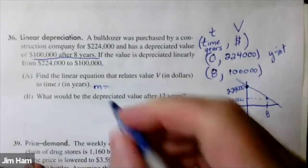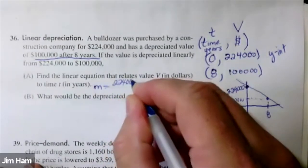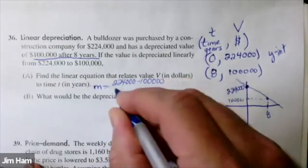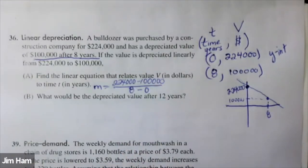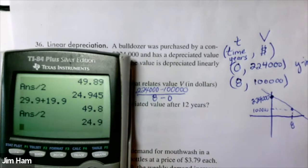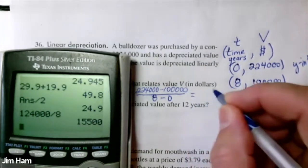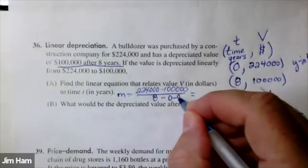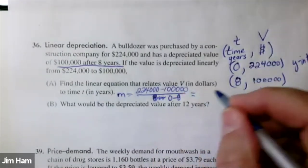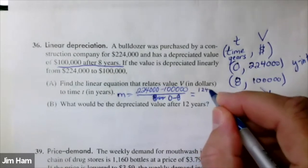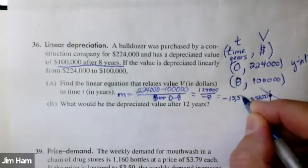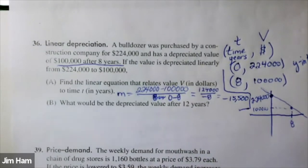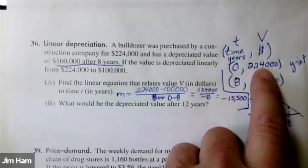Let's subtract the y-coordinates on top and similarly subtract the x-coordinates on the bottom. I can do that calculation on the top pretty quickly — that's 124 — and we're going to divide that by eight. I knew that the slope had to be a negative number. So there's the slope, and there's the y-intercept.